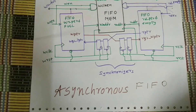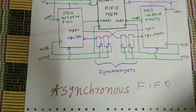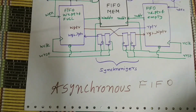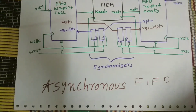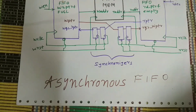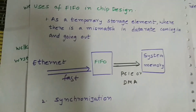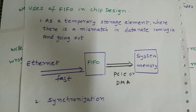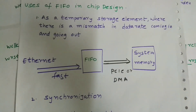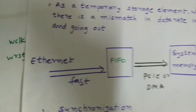Hey guys, today's topic is asynchronous FIFO. We have discussed synchronous FIFO — please check that video before going through this one. Asynchronous FIFO finds various applications in reality. For example, Ethernet dumps data into an asynchronous FIFO where it is used by PCI Express and into the system memory. Ethernet and PCI use two different clocks: a write clock and a read clock.